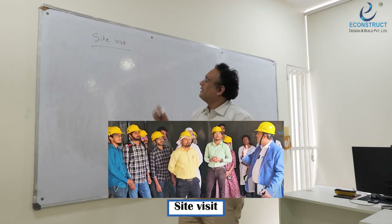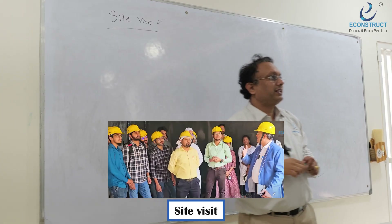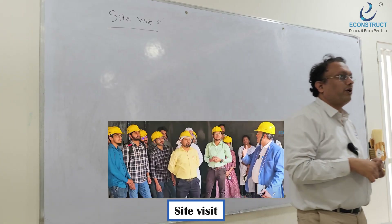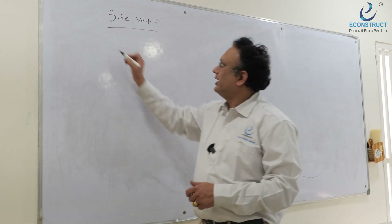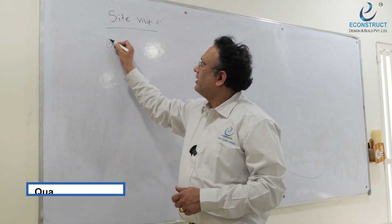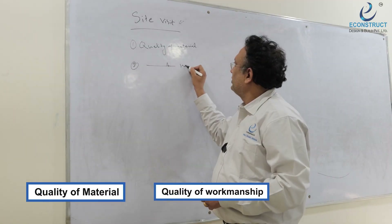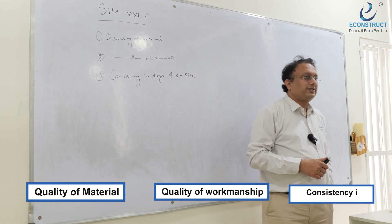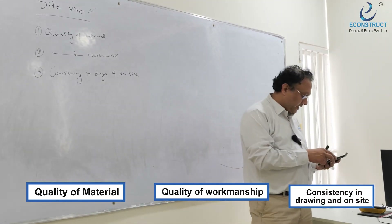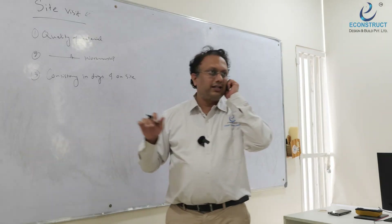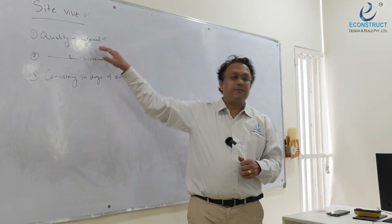Many people face problems during site visits. When you go to a site visit, there are three things you need to check: first is the quality of material, second is quality of workmanship, and third is consistency between the drawing and what is on site. These three things are essential.